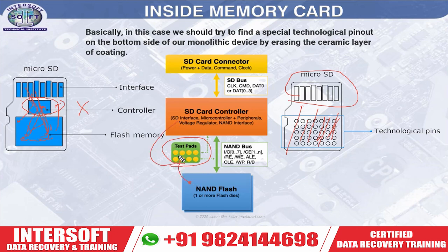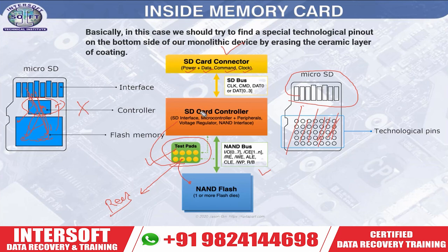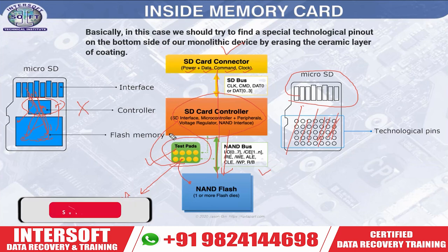In that condition, we need these test points to recover the data. From the NAND, whatever pins are coming out, we have to make a jumper and read the data from here. That is physical data recovery from the memory card. Once we get the pin number, we can recover the data. The controller is working between the SD connector and the NAND — if the controller is damaged, the data will be lost, and we recover the data from the NAND directly.